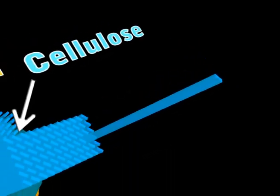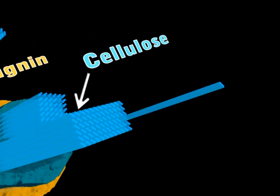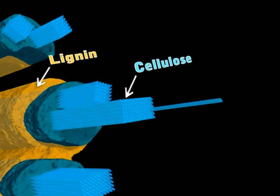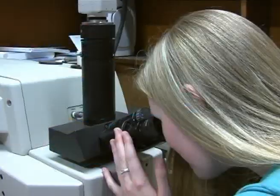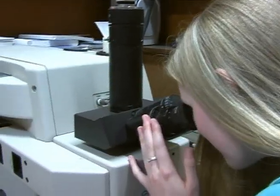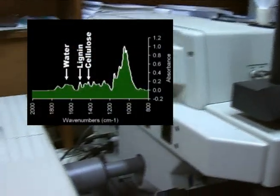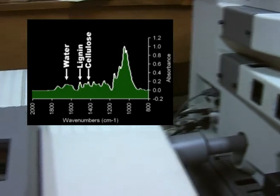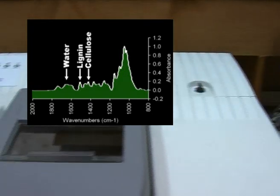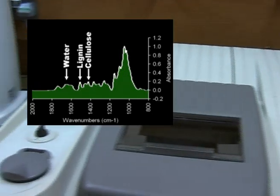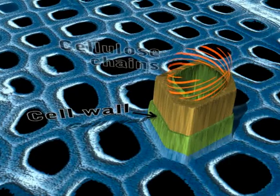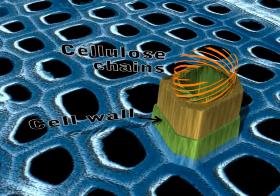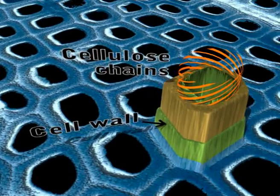Understanding how the cellulose and lignin work together is important for understanding the properties of the wood. This is an infrared microscope, which is used to study the cellulose and lignin in the different parts of the cell structure. The more vertical the chains of cellulose in the tree, the stiffer and stronger the wood.